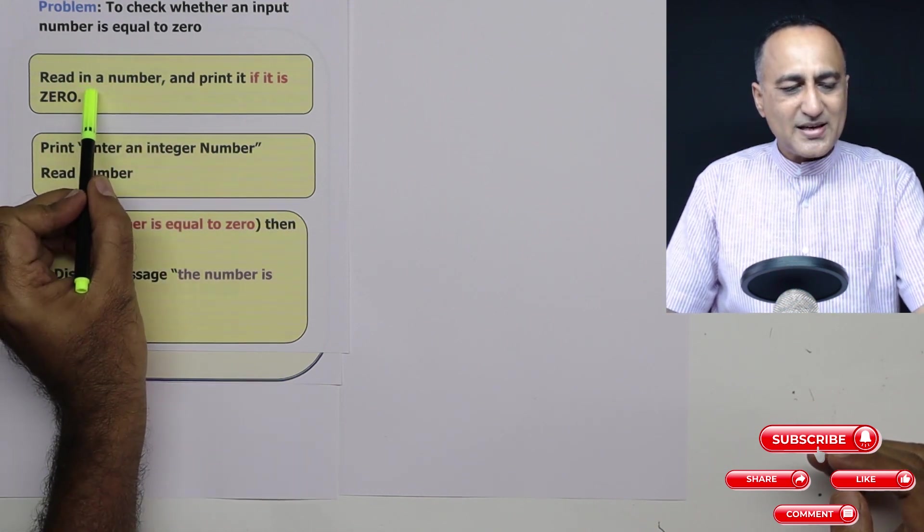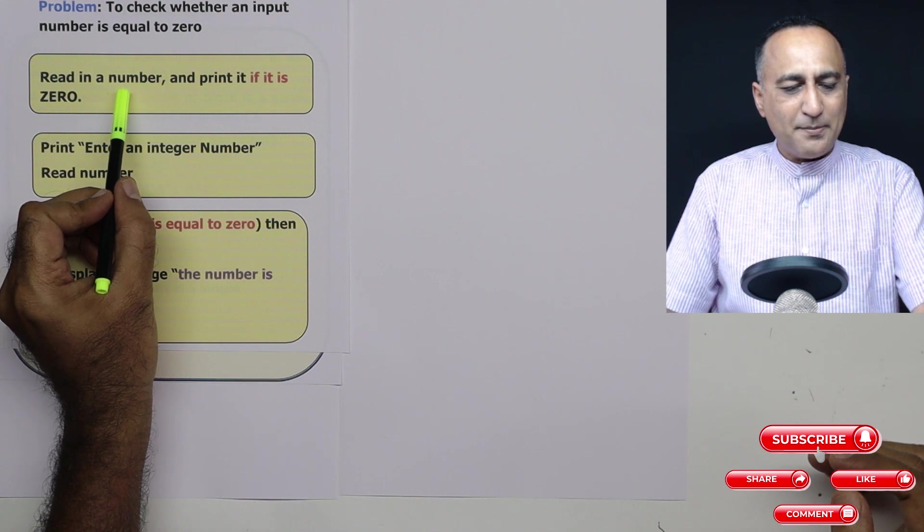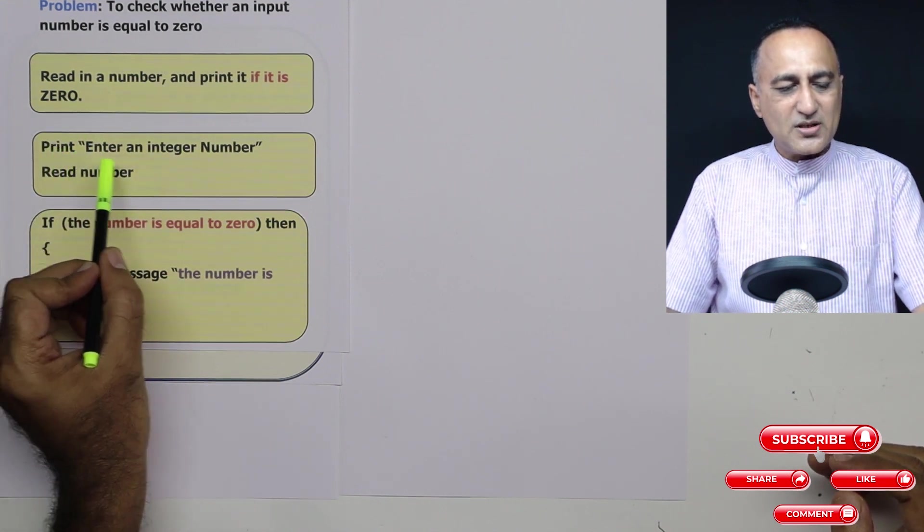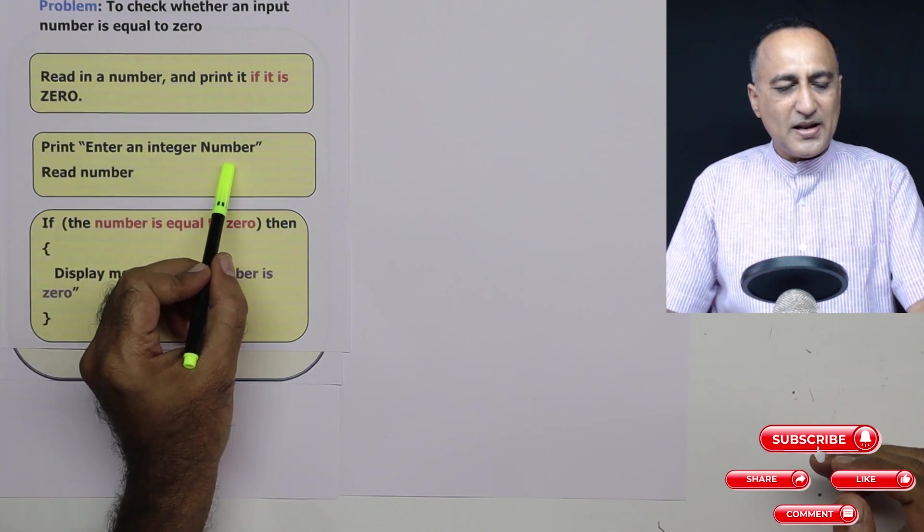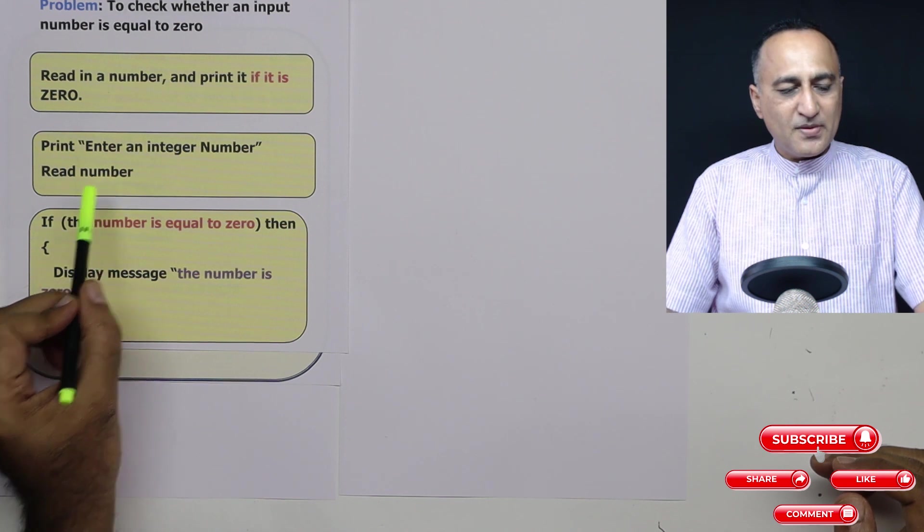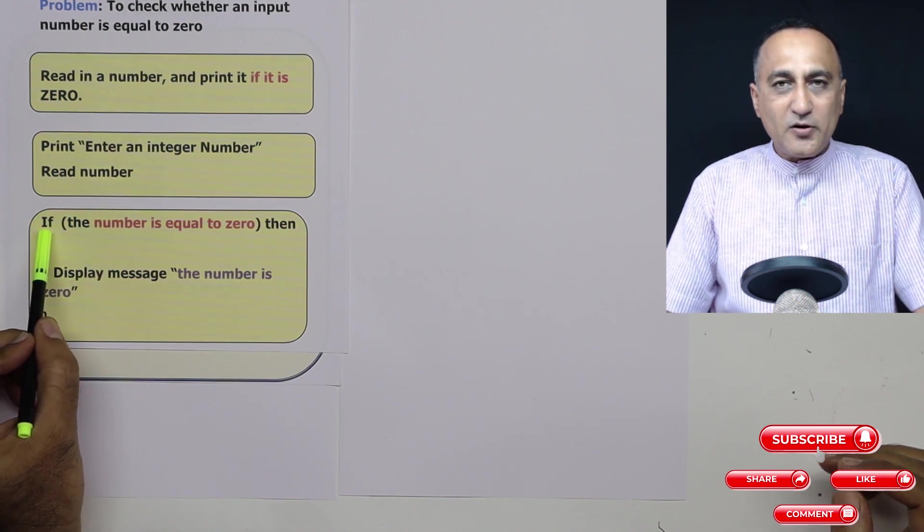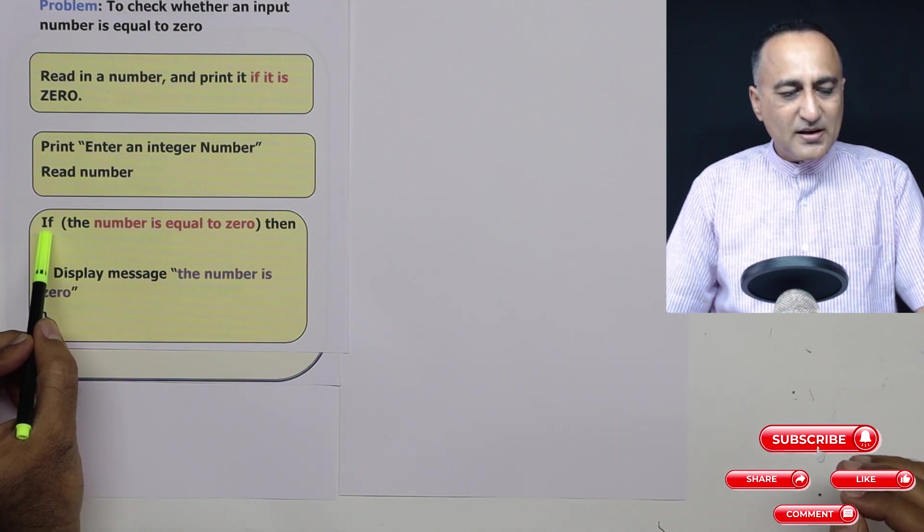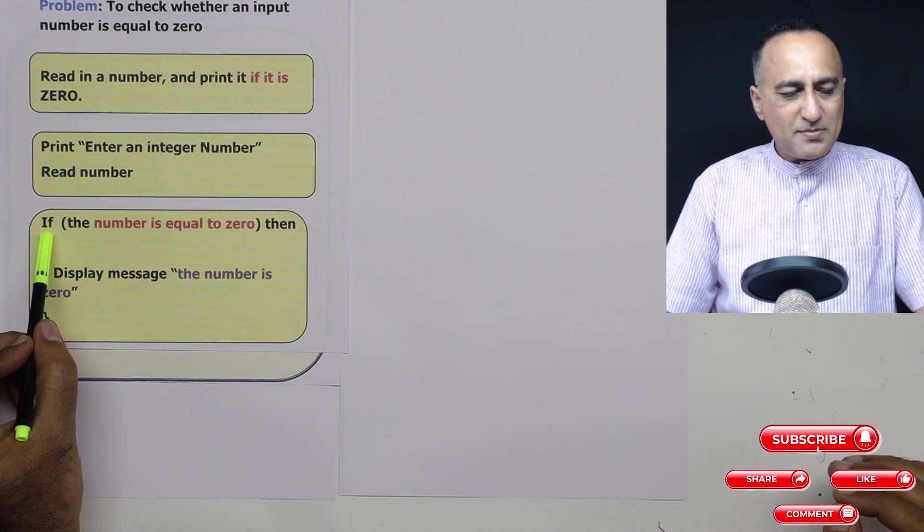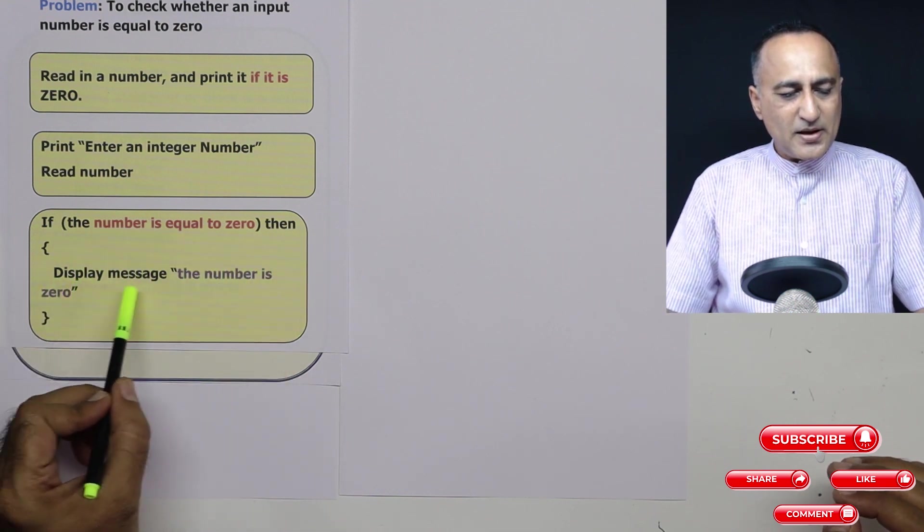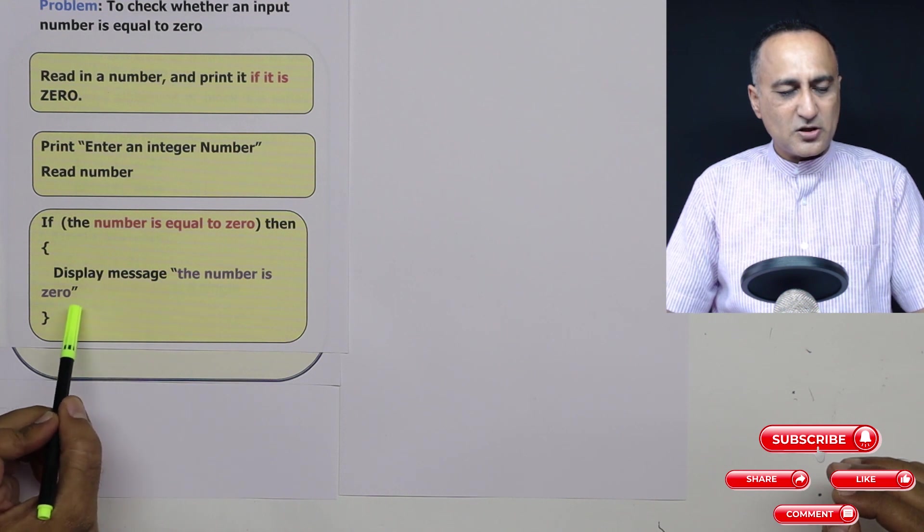The first step what I will do is I will say read in a number. So here what I am doing is I am asking the user enter an integer number. Then I am going to read the number. Then I will be required to take a call or I will be required to make a decision. In the decision what I am doing is I am saying if the number is equal to zero, then display the message the number is zero.